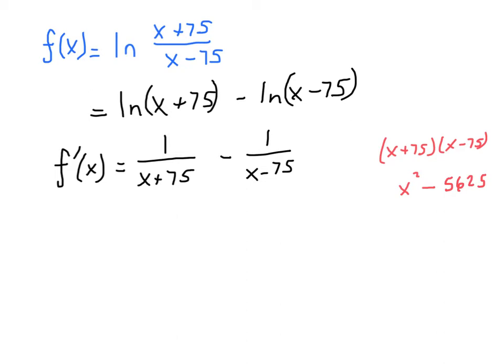So if I'm adding these fractions, I will have x minus 75 over x squared minus 5,625 minus x plus 75 over x squared minus 5,625.